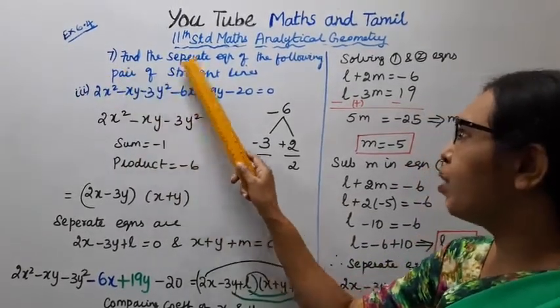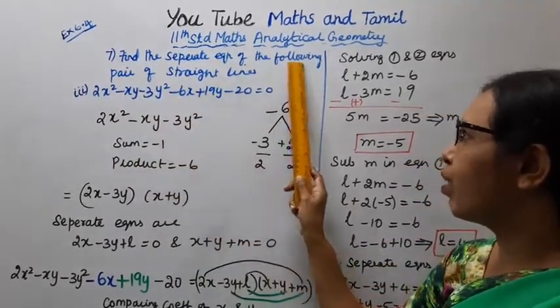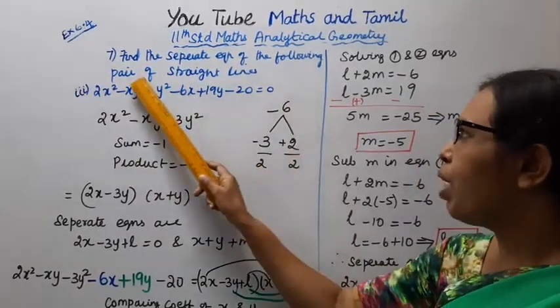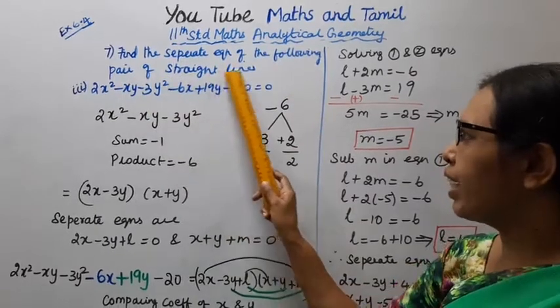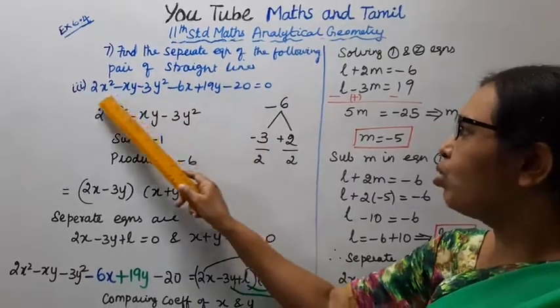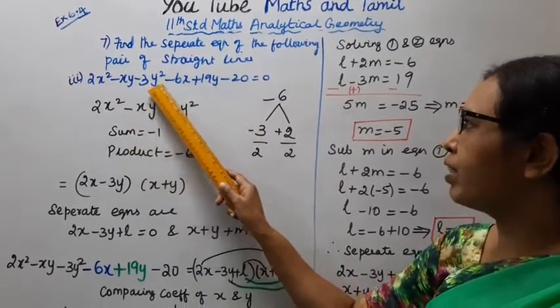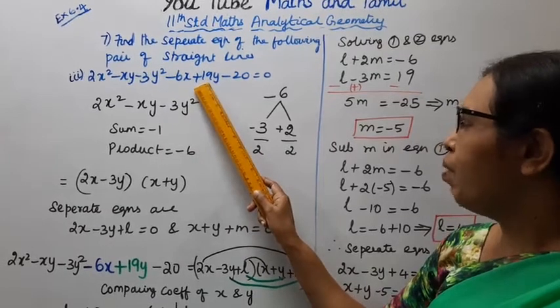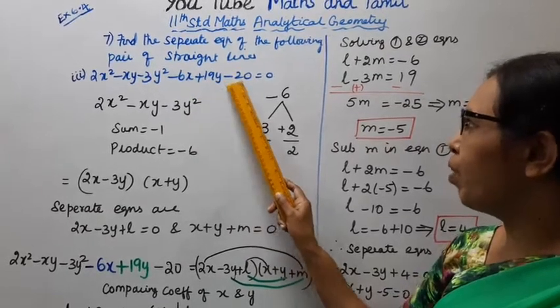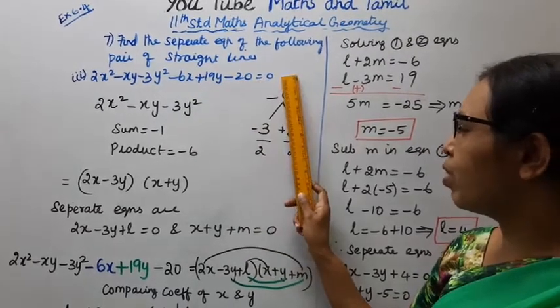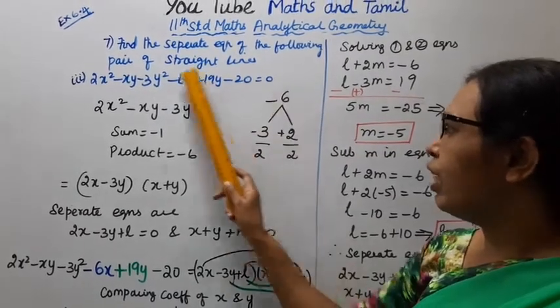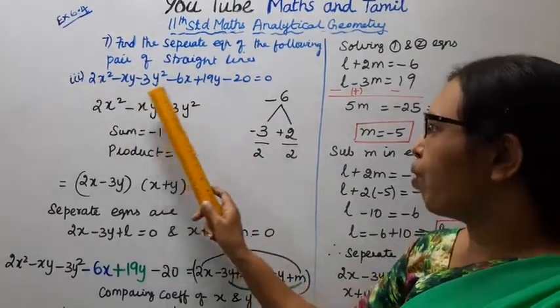Find the separate equation of the following pair of straight lines: 2x squared minus xy minus 3y squared minus 6x plus 19y minus 20 equals 0.